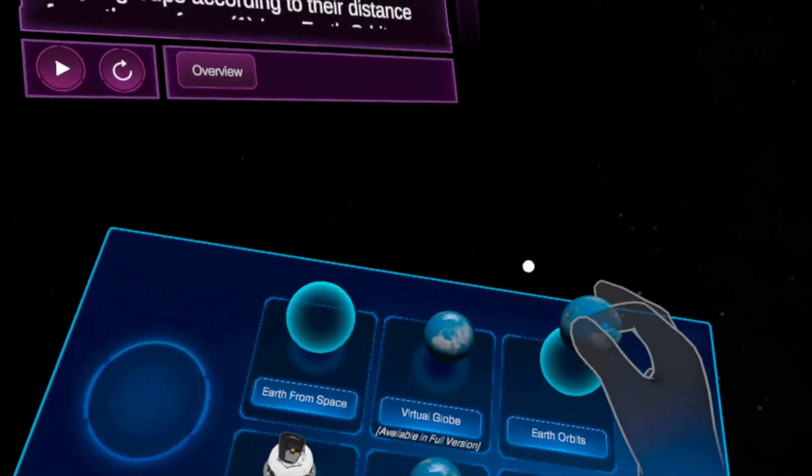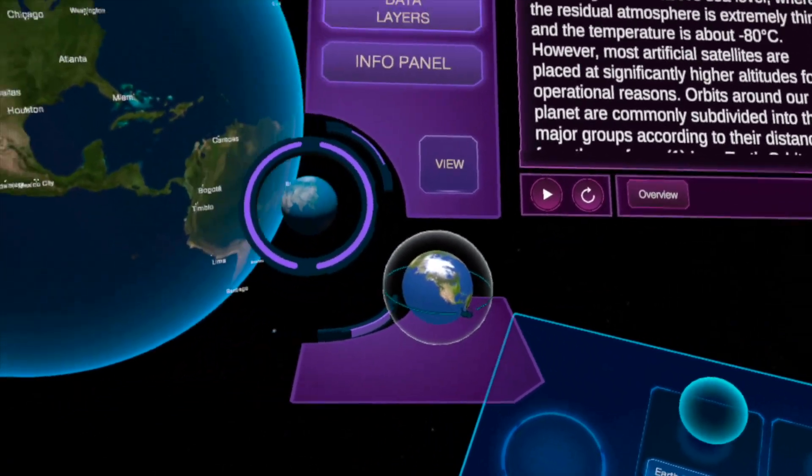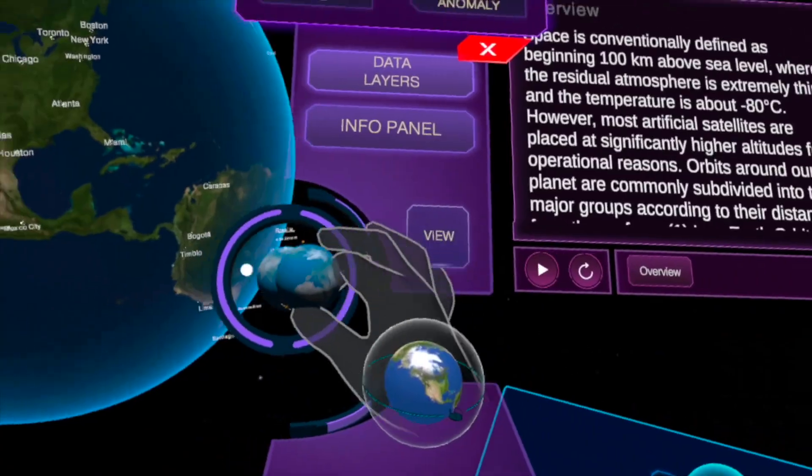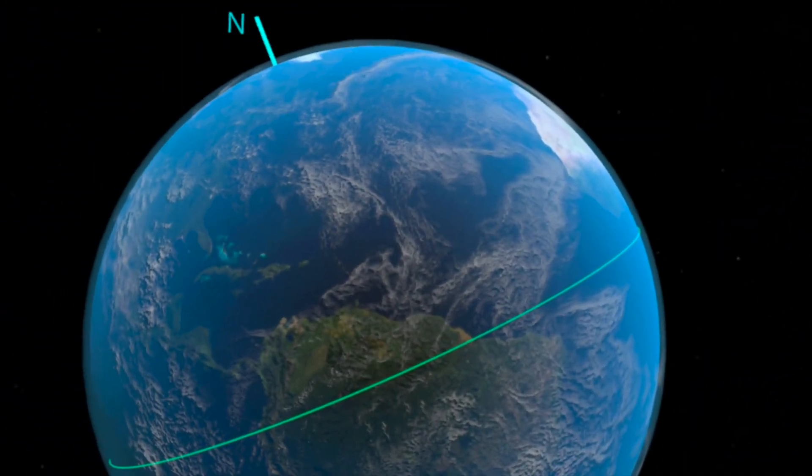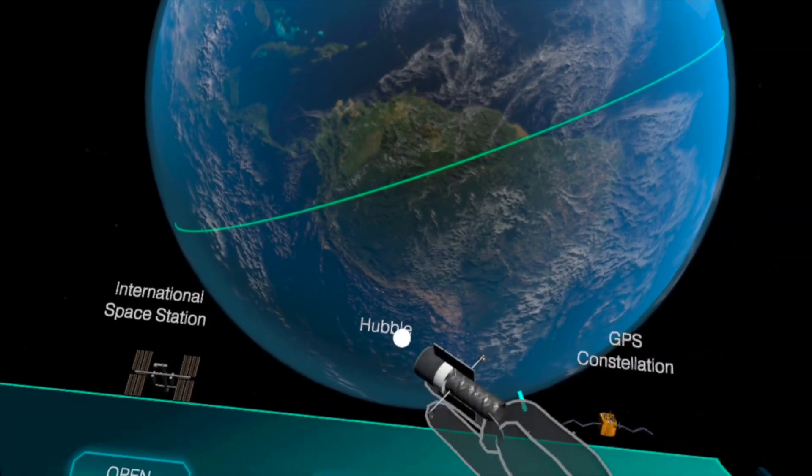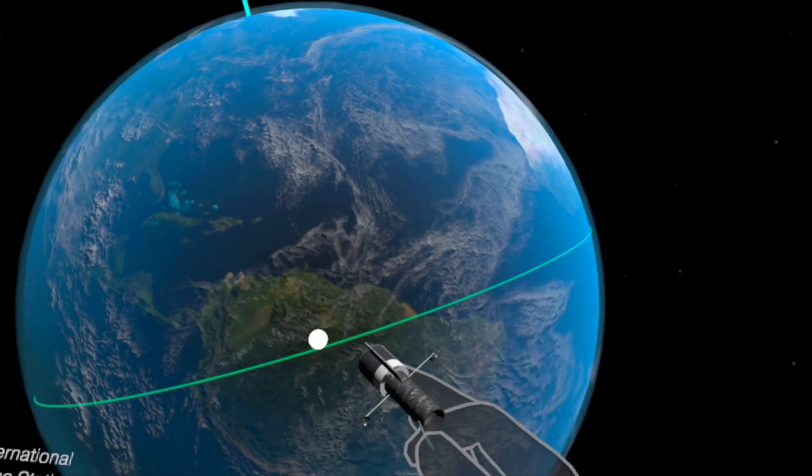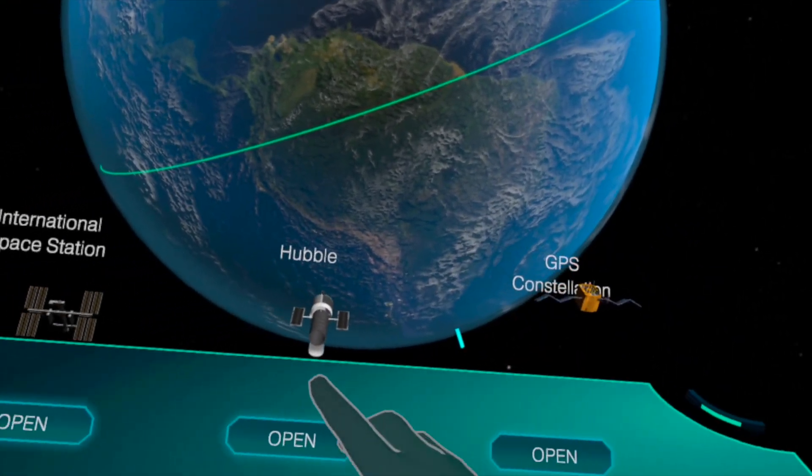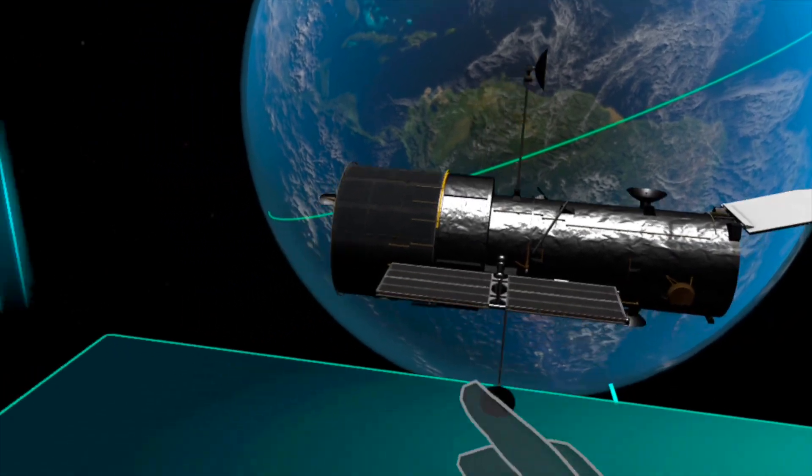And now I have to do Earth from space, virtual globe. Let's do the Earth. Oh, that's a new one. Let's do it. The thing is like that, put it in here. It's loading, hopefully. A moment. Ah yes, you have to put it over there. Oh that's new.